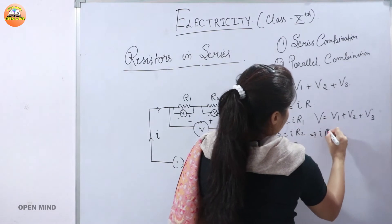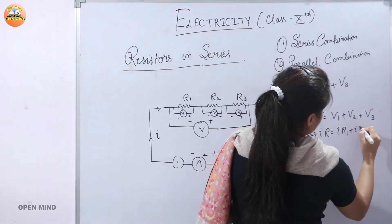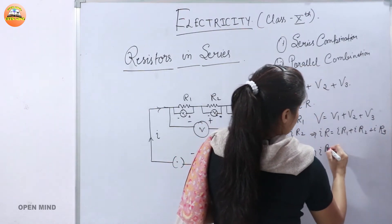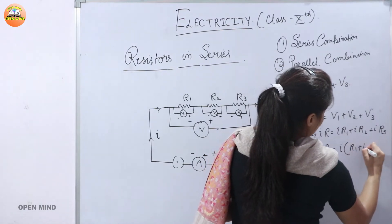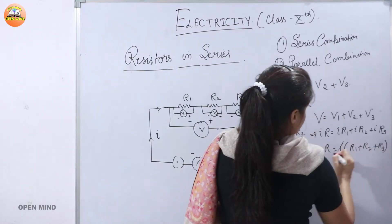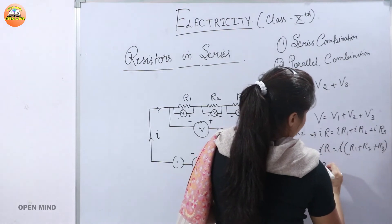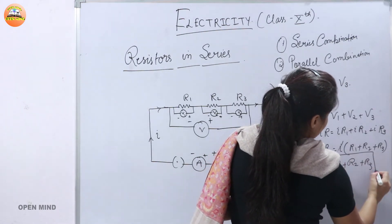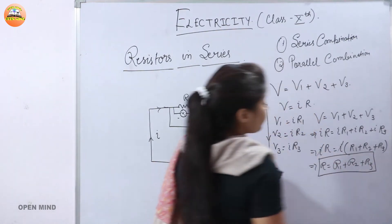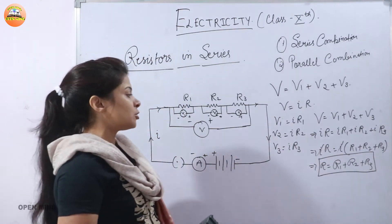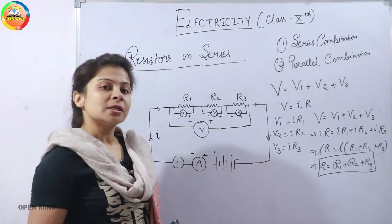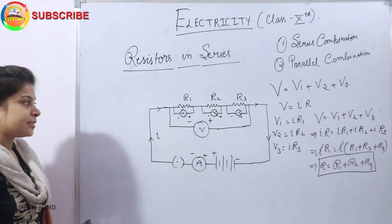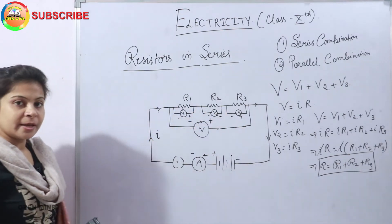Substituting the values: I·R = I·R1 + I·R2 + I·R3. Taking I as common: I·R = I·(R1 + R2 + R3). Cancelling I from both sides gives R = R1 + R2 + R3. This means in a series combination, the total resistance across the two ends of the circuit equals the sum of all individual resistances. This type of connection is called a series connection because all resistors are in the same line.